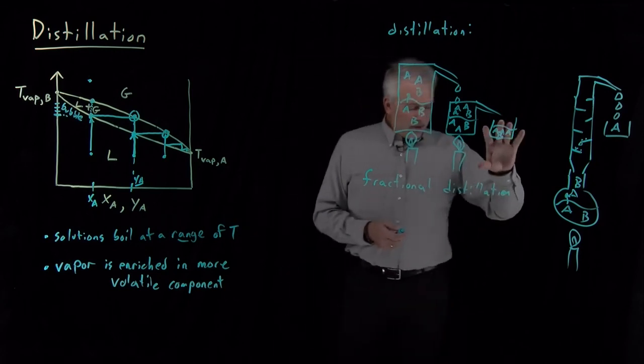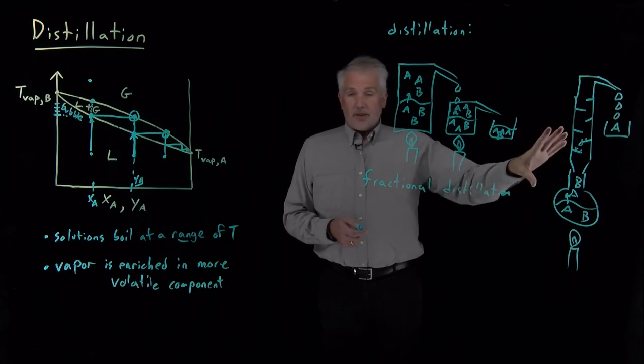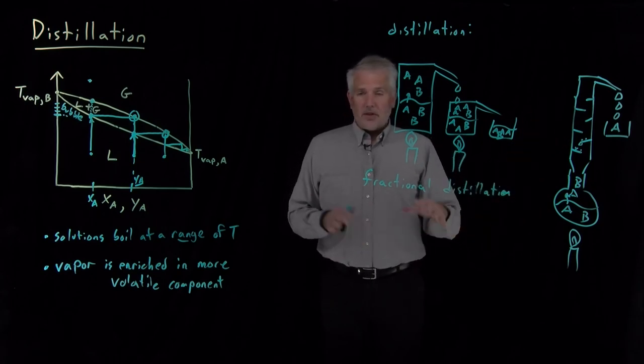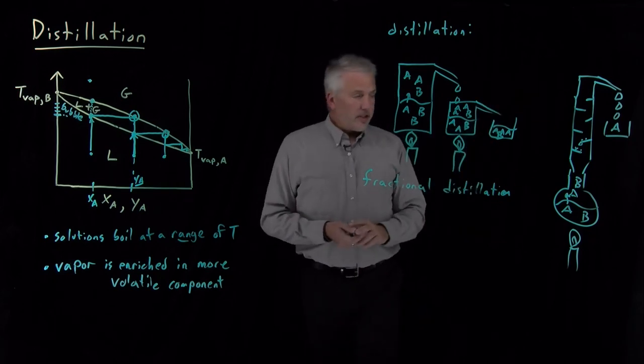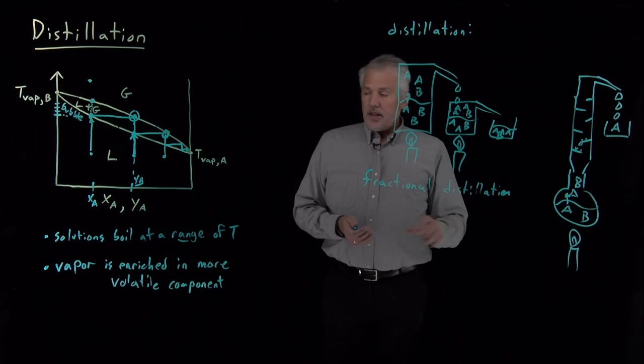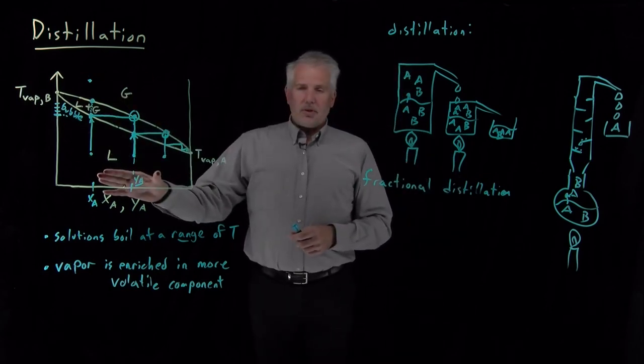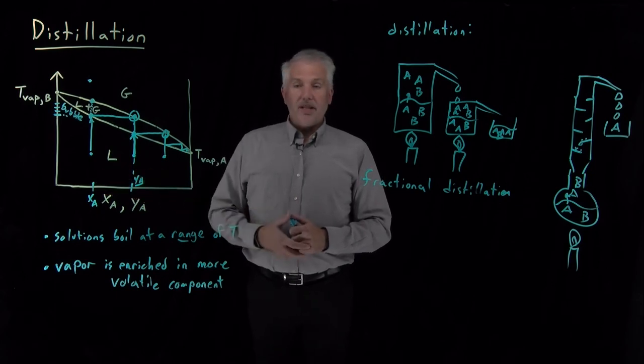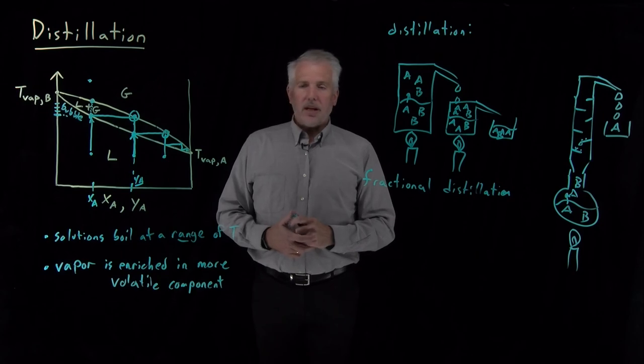Some important things to remember about fractional distillation: first of all this could be done at the lab scale. We do this at the bench top sometimes when we want to distill a solvent. It's also done at industrial scale with building-sized fractional distillation columns. The other thing to remember is that everything I've described so far is a consequence of this temperature composition diagram which we developed for the case of an ideal solution. So things do get a little bit more complicated when we talk about non-ideal solutions so we'll have to consider that next.